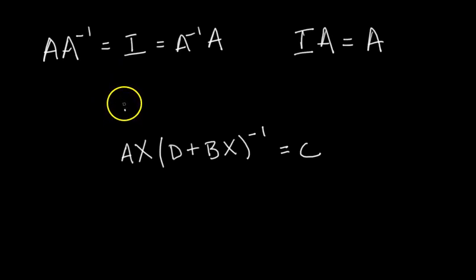in algebra class, if you're just thinking about scalars, 3 times 4, for example, is the same thing as 4 times 3, right? This is the commutative property of multiplication.